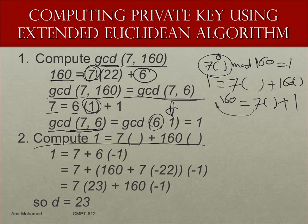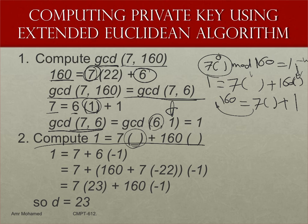We reverse the Euclidean algorithm steps. We know that 7 equals 6 times 1 plus 1, which means 1 equals 7 minus 6 times 1, so 1 is 7 plus 6 multiplied by minus 1. We keep the 7 throughout the process because eventually we want to express 1 as 7 times something, and that something is the multiplicative inverse.